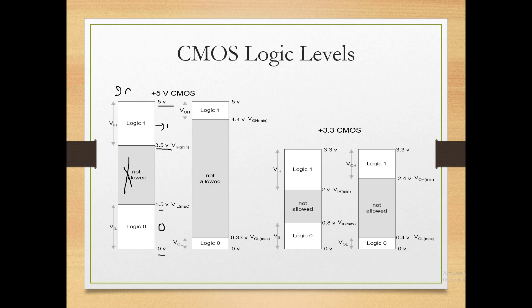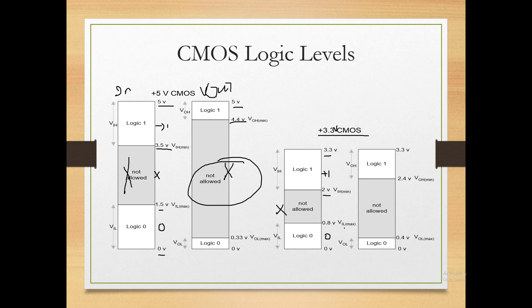The output noise margin for logic 1 is 4.4 to 5 volts, and for logic 0 it is 0 to 0.33 volts. The middle range is 'not allowed'. For 3.3V CMOS, on the input side: 2V to 3.3V is logic 1, 0 to 0.8V is logic 0, and 0.8 to 2V is 'not allowed'. On the output side: 2.4 to 3.3V is logic 1, 0 to 0.4V is logic 0, and the range 0.4 to 2.4V is 'not allowed'.